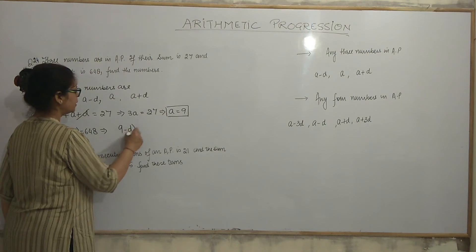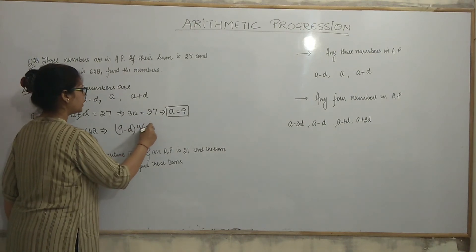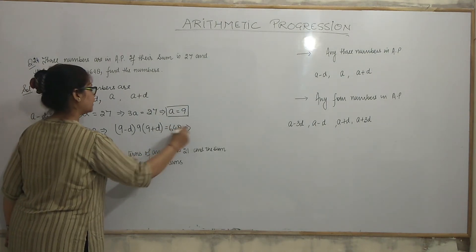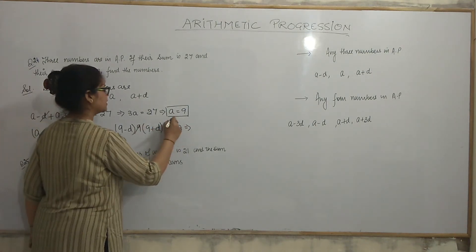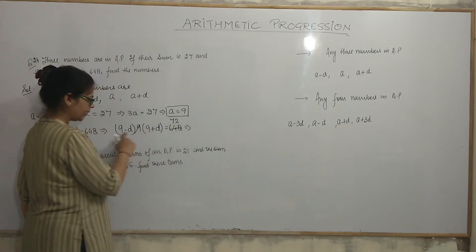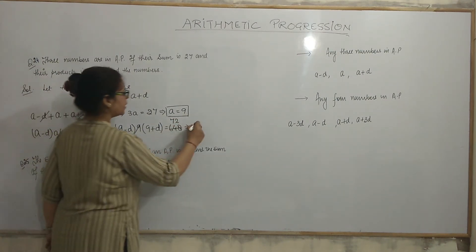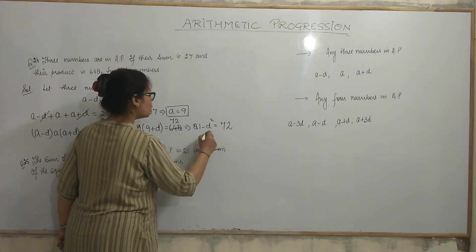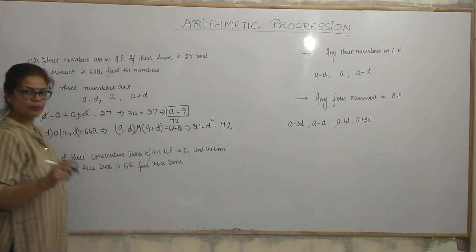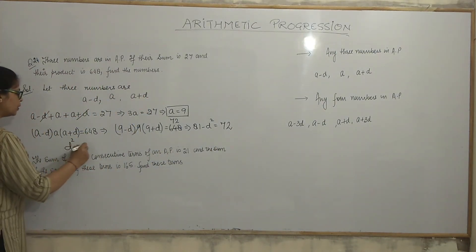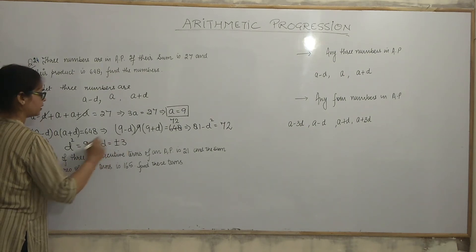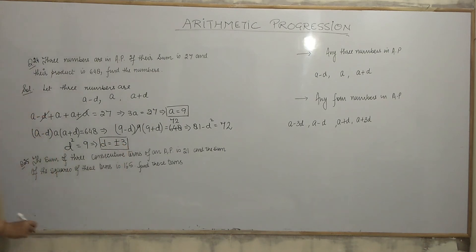Their product is 648. So, product is (a minus d) into a into (a plus d) is equal to 648. You know, value of a is 9. Put the value 9. 9 minus d into 9 into 9 plus d is equal to 648. 9 twos are... And multiply 9 minus d, 9 plus d. 81 minus d square is equal to 72. So, minus d square is equal to minus 9. So, d square is equal to 9. So, d is equal to plus minus 3.